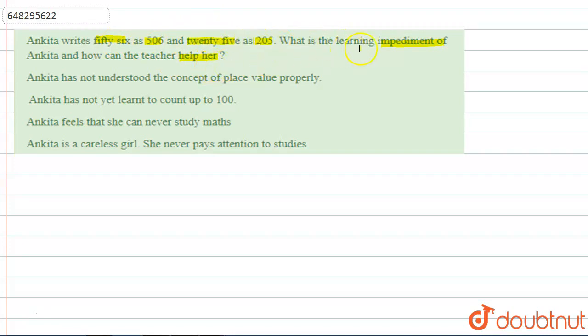So here we have four options. Option A: Ankita has not understood the concept of place value properly. Option B: Ankita has not yet learned to count up to 100. Option C: Ankita feels she can never study math. Option D: Ankita is a careless girl who never pays attention to studies.